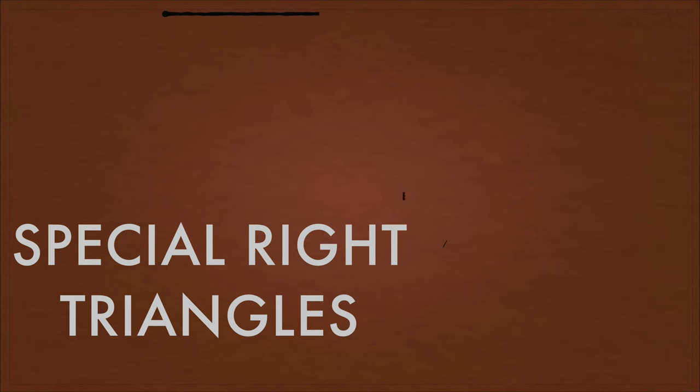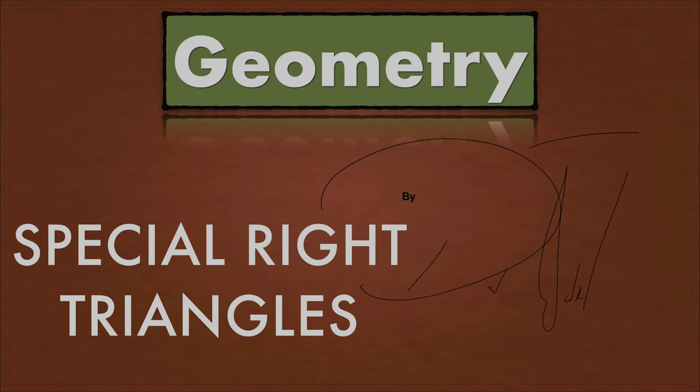So today we're actually talking about things that are special in this video as well. We're talking about special right triangles. Specifically, we are talking about 45-45-90 triangles in this video, or isosceles right triangles. So this is geometry, special right triangles by me, David Peacock.